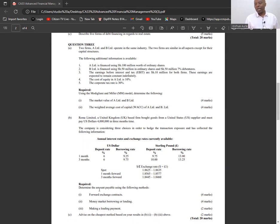The company is considering three choices in order to hedge the transaction exposure and has collected the following information. We have annual interest rates and exchange rates currently available: the US dollar, the sterling pound. This is very good information that will help us in the money market hedging. The spot is given, three months forward is also given.